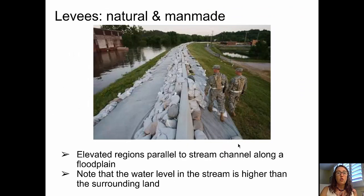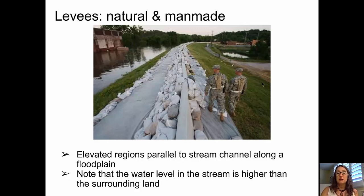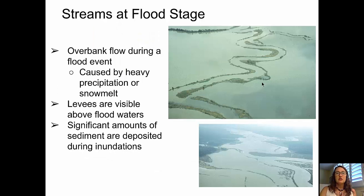Levees are elevated regions that run parallel to a stream channel along a floodplain. They can be either natural or man-made and help protect against flooding. In this picture of a man-made levee, you can see that the water level in the stream is actually higher than the surrounding land — without the levee, the entire area would be flooded. Pictures of streams at flood stage clearly show the levees still above the flood level, and also illustrate that significant amounts of sediment are deposited by the muddy, sediment-laden water as it flows through the flooded region.